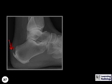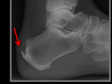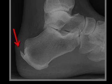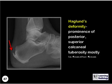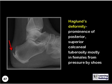What is the name of that deformity? This is Haglund's deformity, which is prominence of the posterior superior calcaneal tuberosity, seen mostly in females, presumably from pressure by shoes.